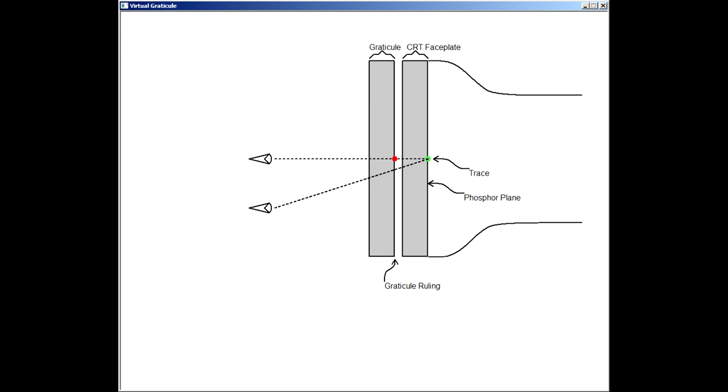Some space is shown between the graticule and CRT faceplate for clarity. This space would normally be as small as possible to minimize but not eliminate the parallax error.